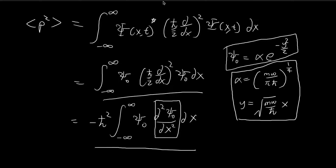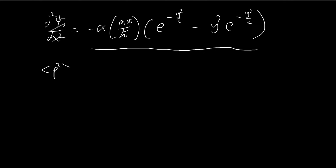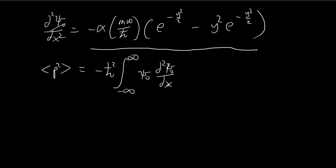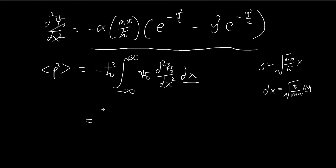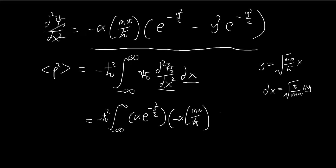Now we can substitute this into the expression for the expected value. Notice that everything is in terms of y, so we also need to substitute dx with dy. The substitution is straightforward: dx equals the square root of h-bar divided by m omega times dy. So psi naught equals alpha e to the power of negative y-squared over 2, the second derivative equals negative alpha m omega divided by h-bar times the bracket e to the power of negative y-squared over 2 minus y-squared times e to the power of negative y-squared over 2, and dx equals h-bar divided by m omega dy.